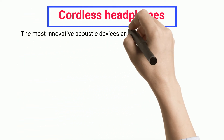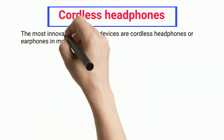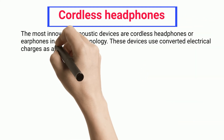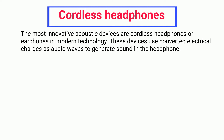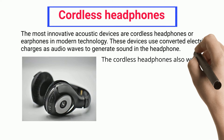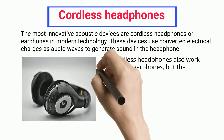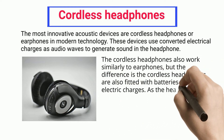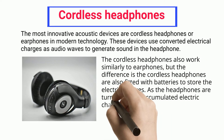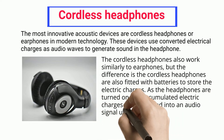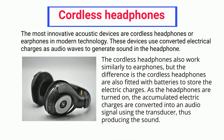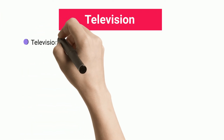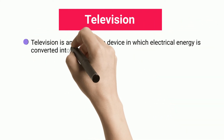The most innovative acoustic devices are cordless headphones or earphones in modern technology. These devices use converted electrical charges as audio waves to generate sound. Cordless headphones work similarly to earphones, but they are also fitted with batteries to store electric charges. As the headphones are turned on, the accumulated electric charges are converted into an audio signal using the transducer, thus producing sound.